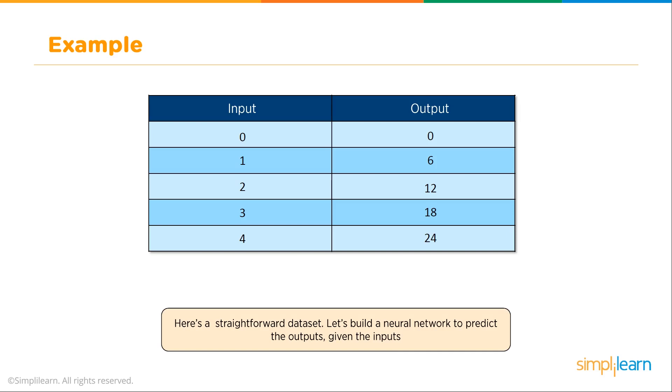Here's a straightforward data set. Let's build a neural network to predict the outputs given the inputs. We have an input 0, we expect an output of 0. Input of 1, we expect 6. 2 equals 12, 3 equals 18, and 4 equals 24. We're just doing multiples of 6.